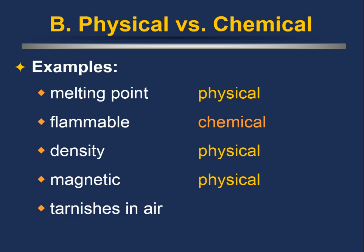Magnetism is a physical property — when you observe something's attraction or repulsion to a magnetic substance, it doesn't change the substance as you watch it become magnetized. Tarnish — some sort of rust or oxidation reaction — is a chemical change. As we'll learn in a future section, rust is an oxidation reaction where you're taking oxygen and incorporating it onto something, making it an oxide, thereby changing the identity of the substance.